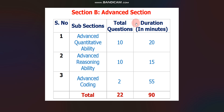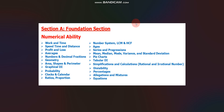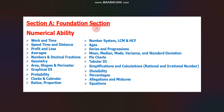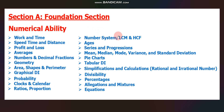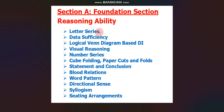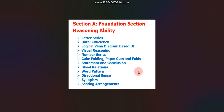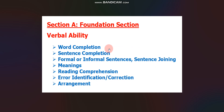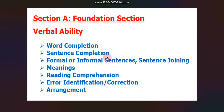Now let's discuss the syllabus. For the Foundation section, Numerical Ability topics include Work and Time, Speed, Time and Distance, and more — you can take a screenshot of the syllabus on screen. For Reasoning Ability, the syllabus includes Letter Series, Data Sufficiency, Logical reasoning, Venn Diagram-based questions, and Data Interpretation. For Verbal Ability, the syllabus is also shown on screen — take a screenshot and start preparing.